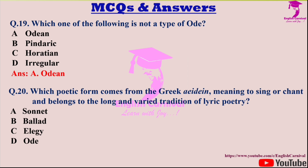Question twenty: Which poetic form comes from the Greek 'aidein,' meaning to sing or chant, and belongs to the long and varied tradition of lyric poetry? Options are A: Sonnet; B: Ballad; C: Elegy; and D: Ode. The correct answer is D — of course it is an ode.